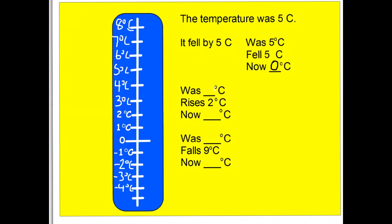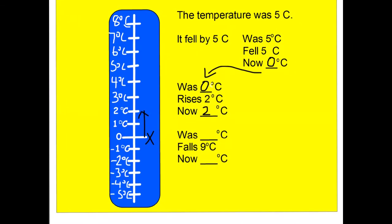Continuing: minus four and minus five degrees. Now for the two temperature questions. The temperature was zero degrees and it rises by two, so the new temperature is two degrees. For the next question: the temperature was two degrees and it falls by nine. Taking away two puts us on zero, and we still need to take away seven more, so we finish on minus seven degrees Celsius.